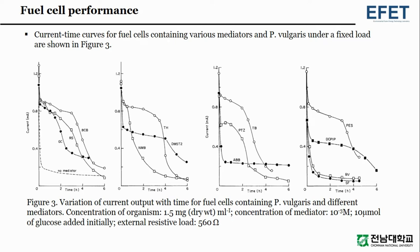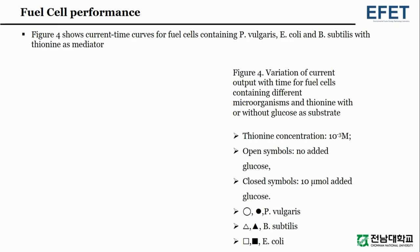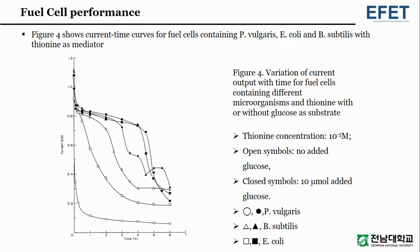Figure 3 shows the variation of current output with time for fuel cells containing Proteus vulgaris and different mediators. It also shows Proteus vulgaris, Alkaligenes eutrophus, Escherichia coli, and Bacillus subtilis with thionine as mediator — showing variation of current output with time for fuel cells containing different microorganisms and thionine, with or without glucose as substrate. Open symbols represent no added glucose; closed symbols denote 10 micromole added glucose. Open and closed circles show Proteus vulgaris; triangles represent Bacillus subtilis; squares represent Escherichia coli. An external load of 560 ohm was applied.